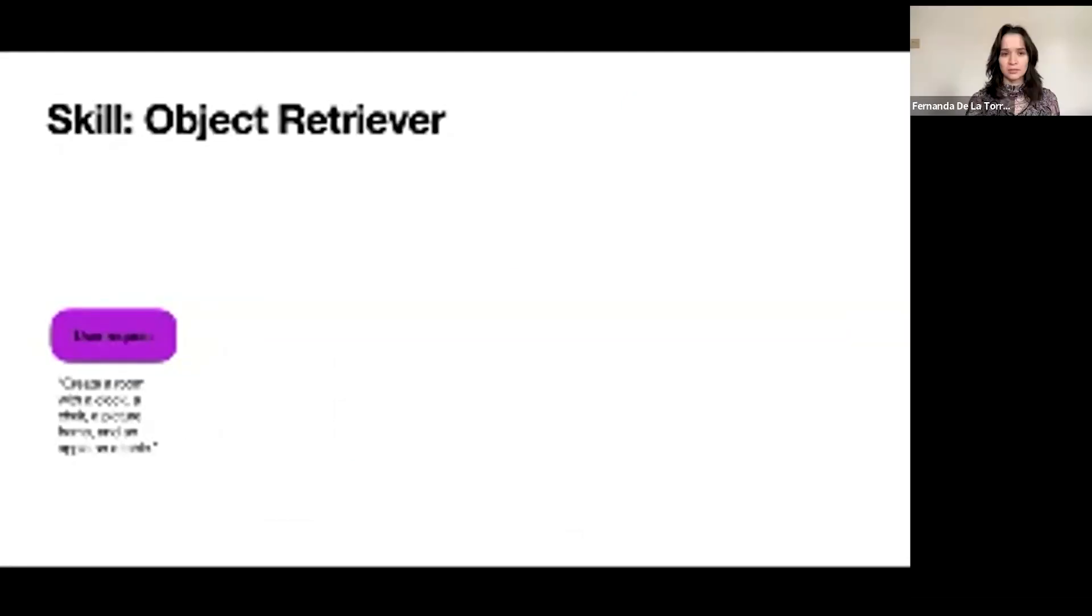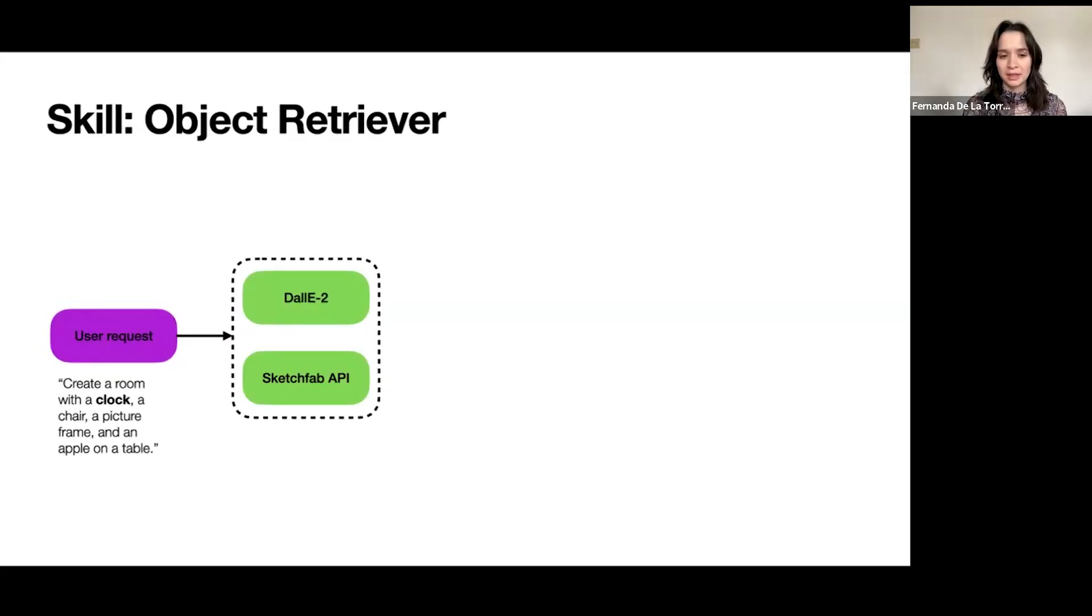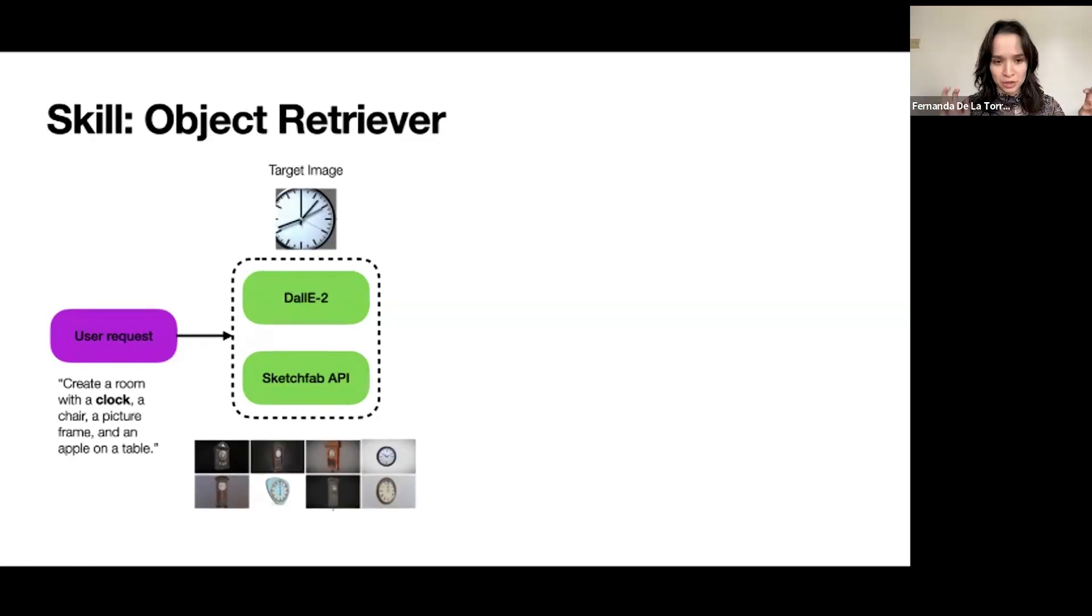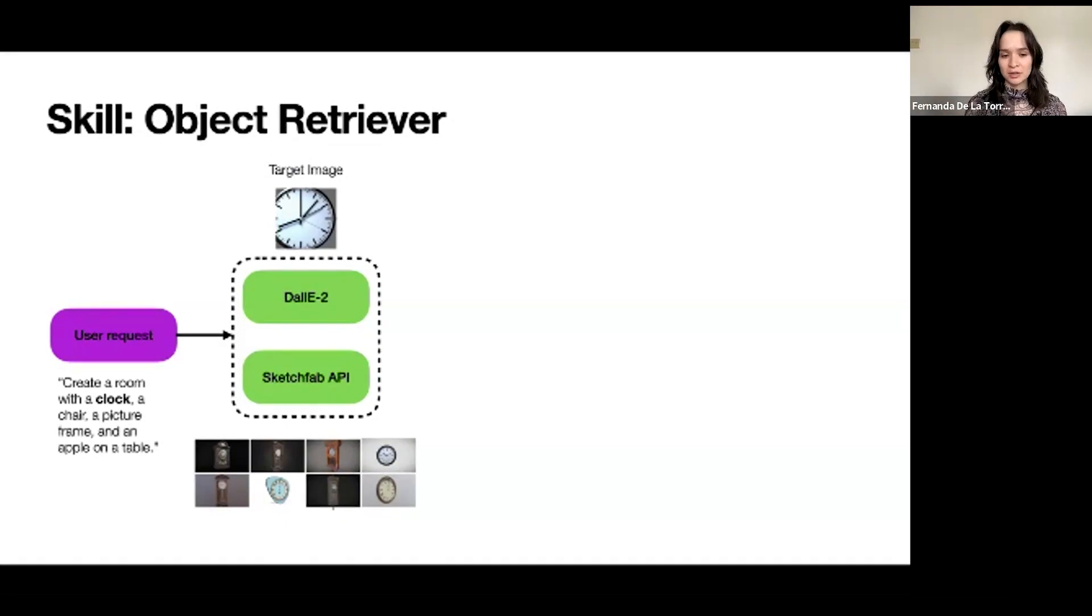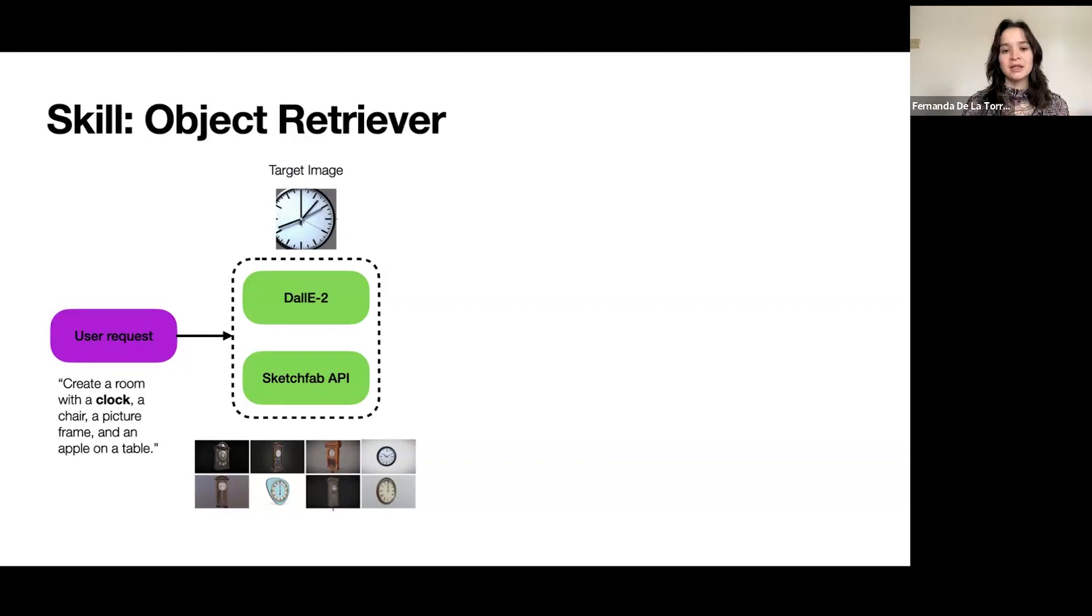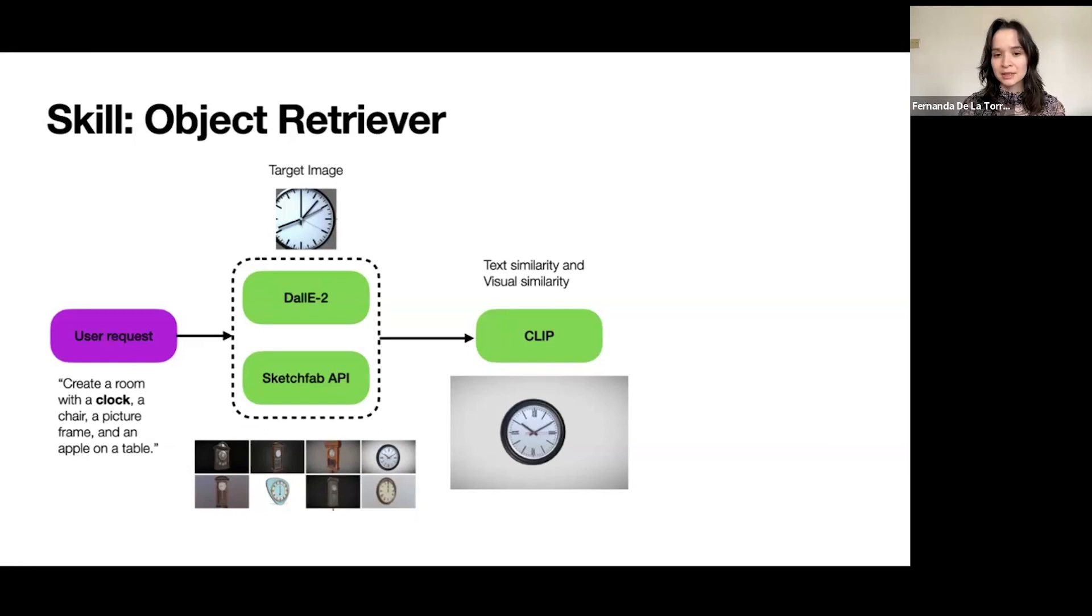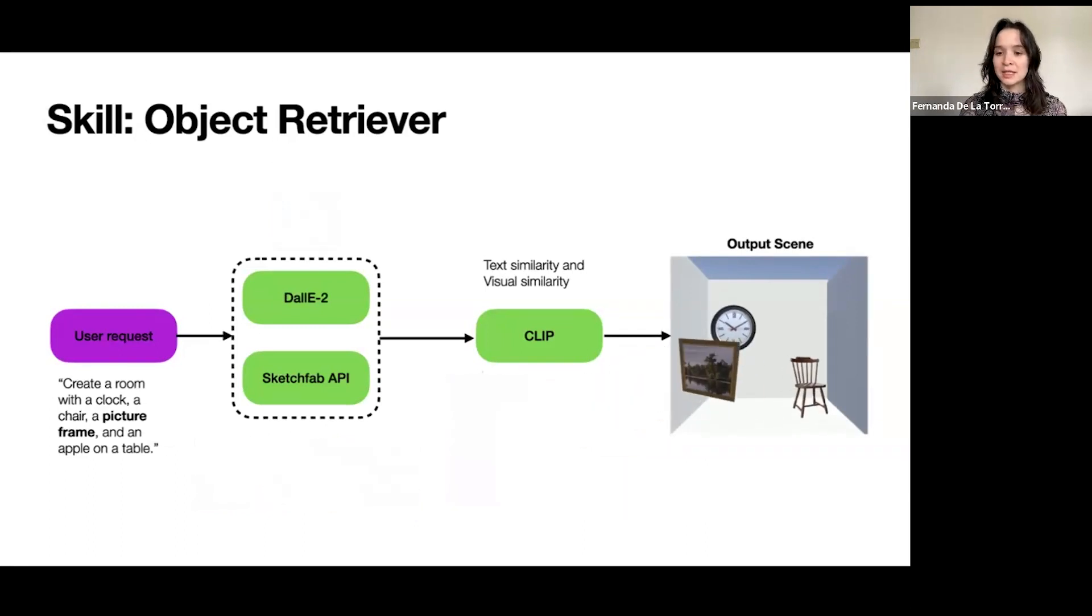Another skill is the object retriever. Let's take the user request, create a room with a clock, a chair, a picture frame, and an apple on a table. To do this, we interface LLMR with both DALI and Sketchfab API. DALI allows us to generate images of the objects we're looking for, and Sketchfab API gives us access to 3D objects generated by many artists. Let's take, for example, the clock. We can ask DALI to generate a clock image, which would give us our target image. We can also take screenshots from all of the objects that we find in Sketchfab API with that specific text. Then we can use clip embeddings to both find the image that is closest in text similarity and visual similarity. Once we identify that 3D object that best matches our target image, we can load it onto 3D space. We can repeat this process for all objects and then generate an entire scene.